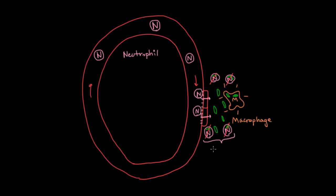Their usual lifespan is only five days, and once they die, they become pus. So a little later, that's what you see when you see pus.